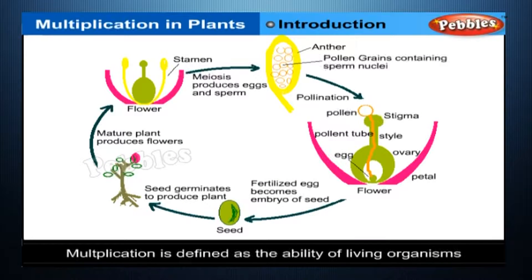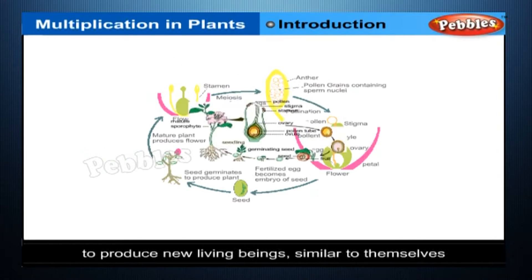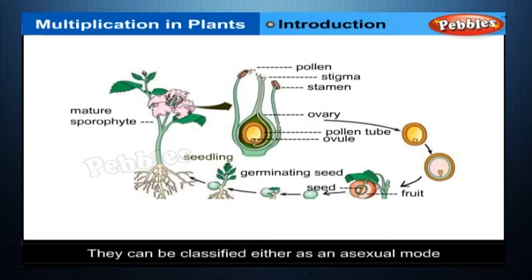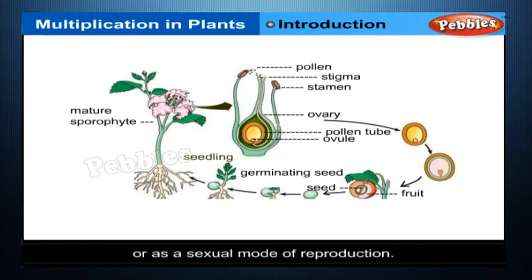Multiplication or reproduction may be defined as the ability of living organisms to produce new living beings similar to themselves. There are a number of methods of reproduction, but each of them can be classified either as asexual mode or as a sexual mode of reproduction.